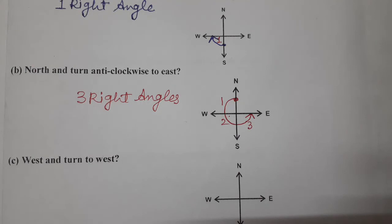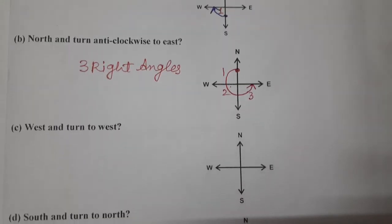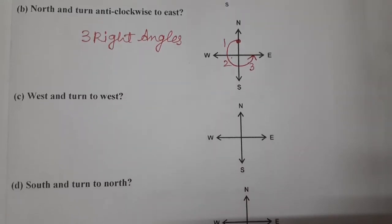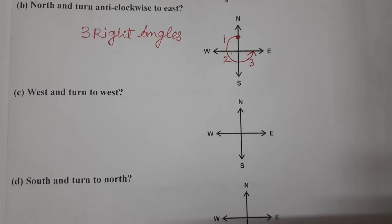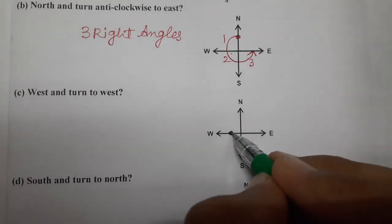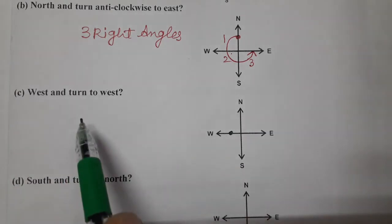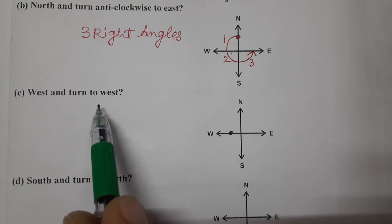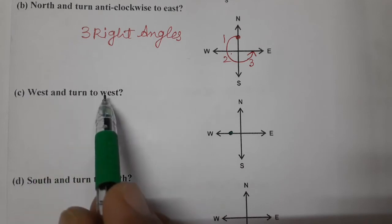Next comes part C. West and turn to west only. So west, we are at west, turn to west. And now the direction is not given to us, whether clockwise or anti-clockwise.